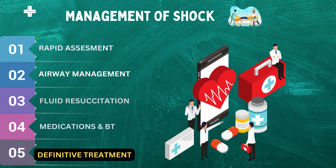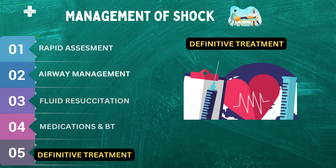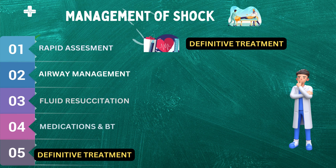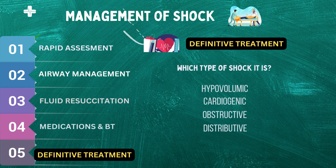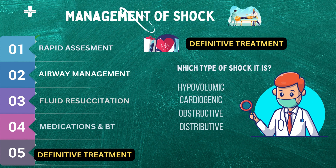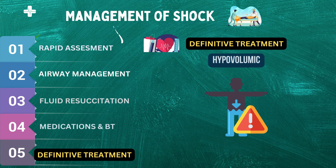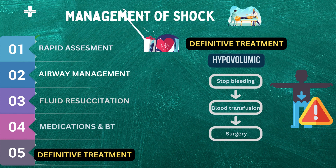Shock is a life-threatening condition that can have many underlying causes. While medications and fluid resuscitation can help stabilize patients, definitive treatment of the underlying cause is necessary for long-term management. The first step is identifying the specific type of shock — hypovolemic, cardiogenic, obstructive, or distributive — using various diagnostic tools and tests. For example, in hypovolemic shock caused by significant blood loss, the definitive treatment would be to stop the bleeding and restore blood volume through transfusion or surgery.